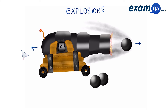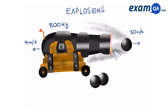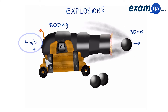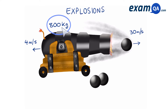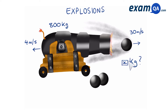Now let's have a look at what the question is trying to ask us. After we shoot the cannon, the ball is going to be moving forward at a speed of 30 meters per second. The cannon is going to recoil at a speed of 4 meters per second, and the mass of the cannon is 800 kilograms. The question is: what is the mass of the ball?